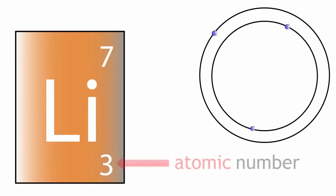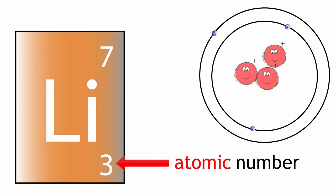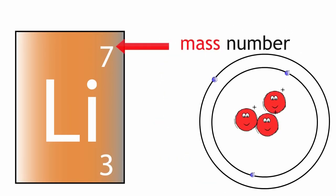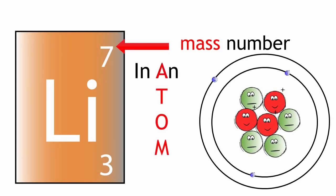So the atomic number is the number of protons in an atom, and the mass number is the number of protons and neutrons in an atom.